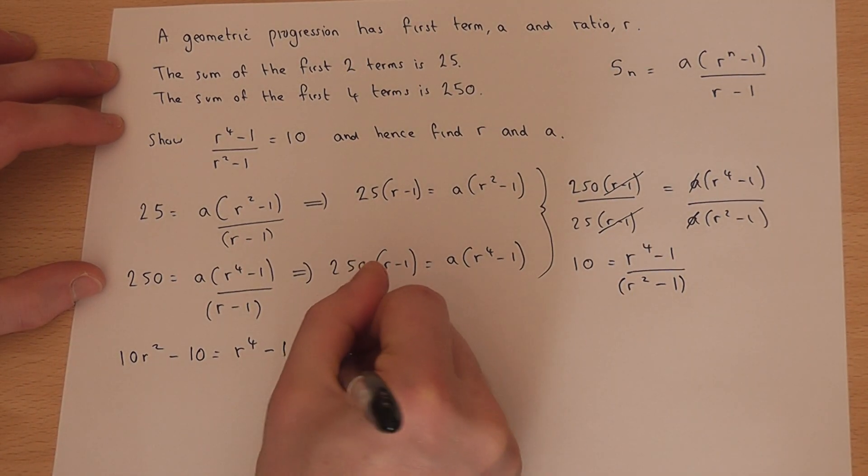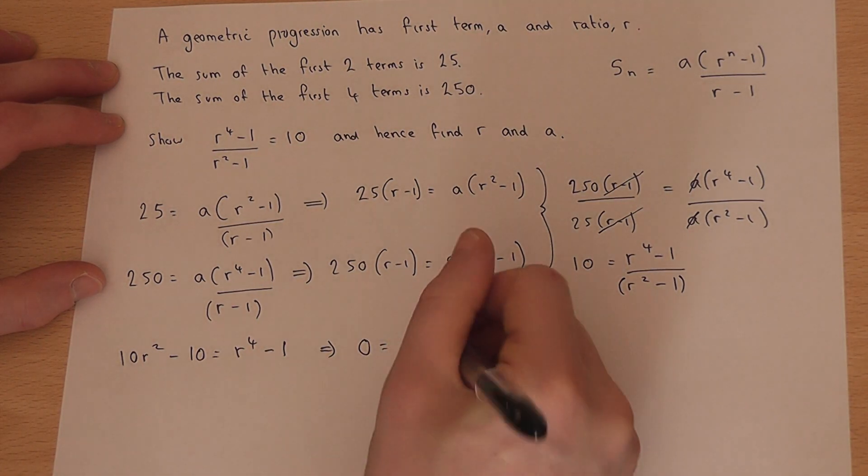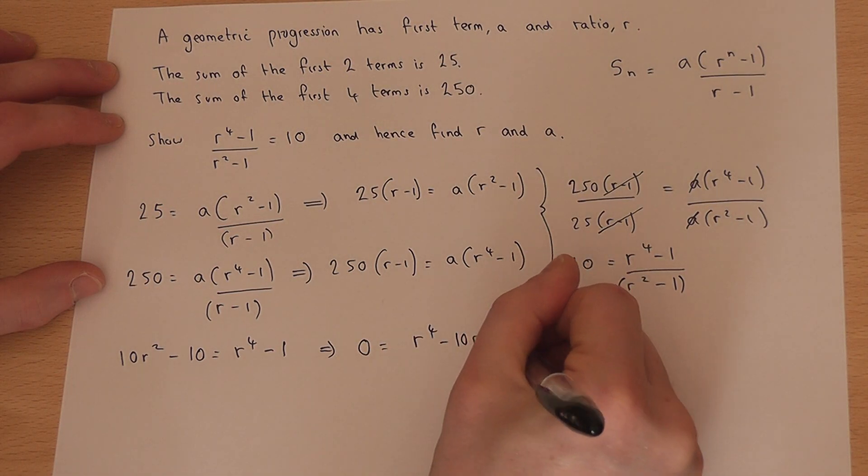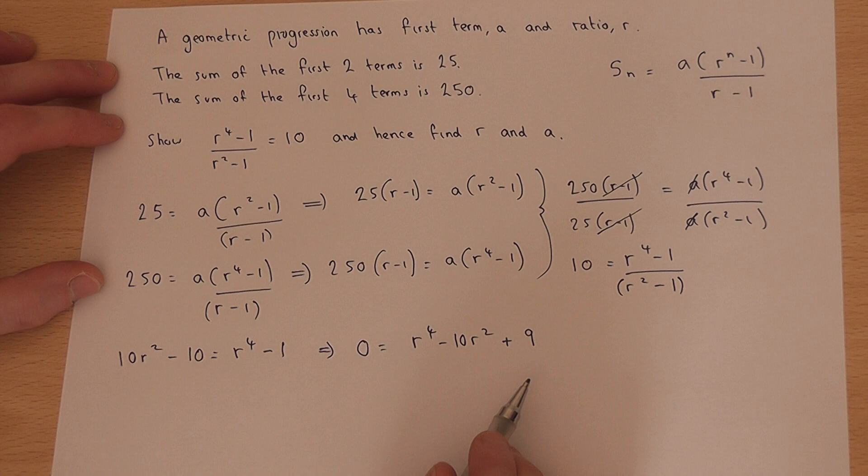I'll rearrange this to get 0 = r⁴ - 10r² + 9. Now this equation can be factorised.